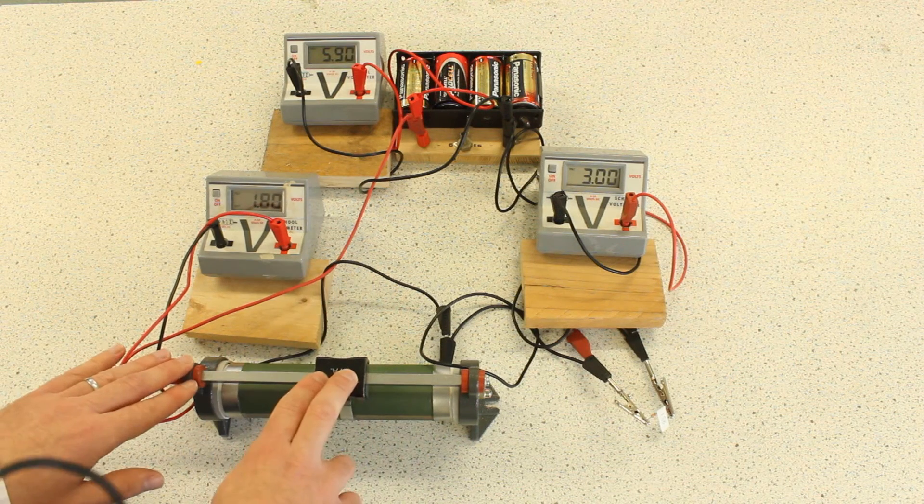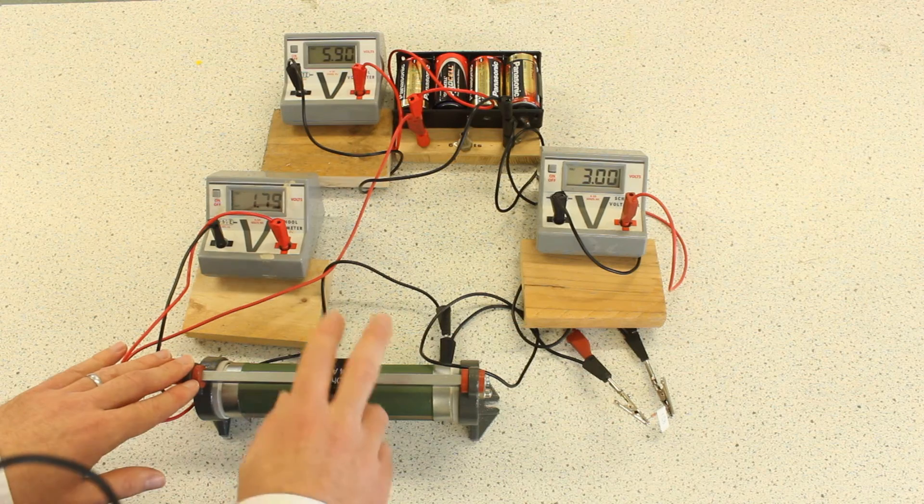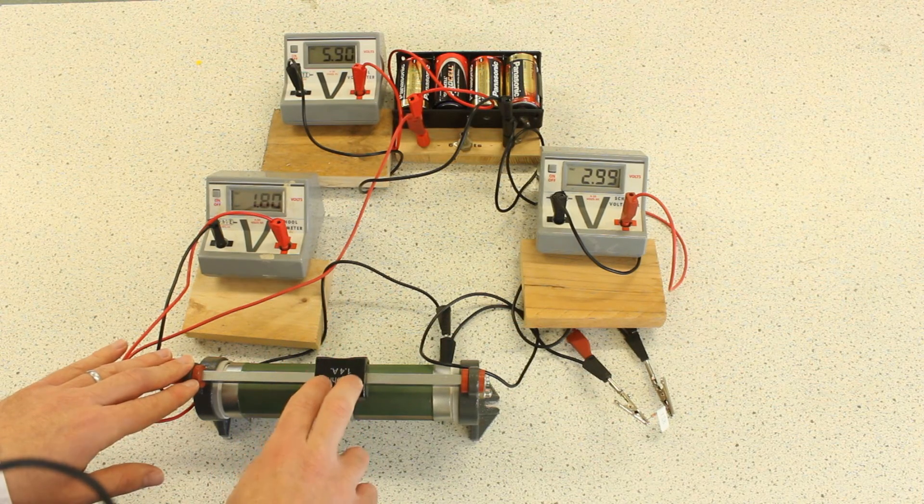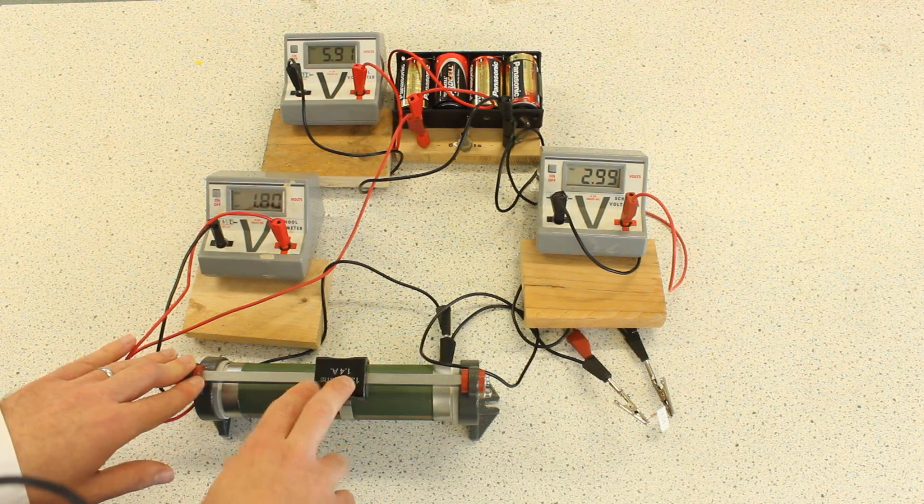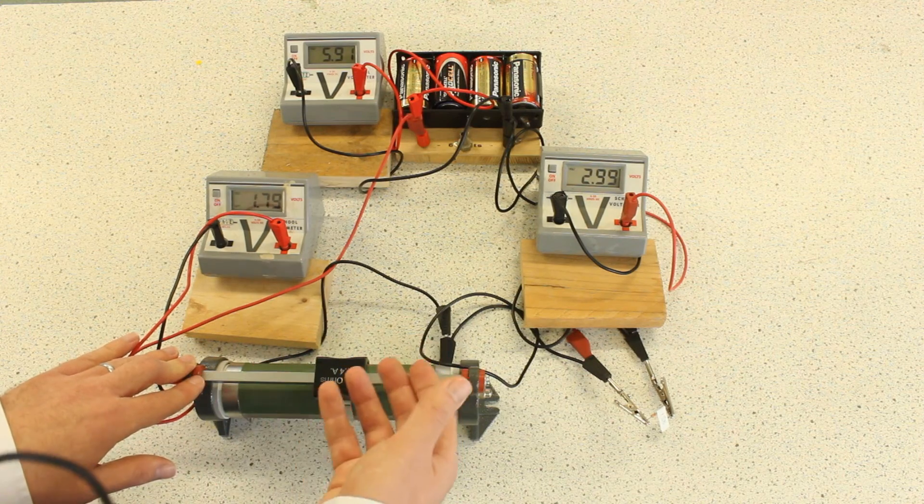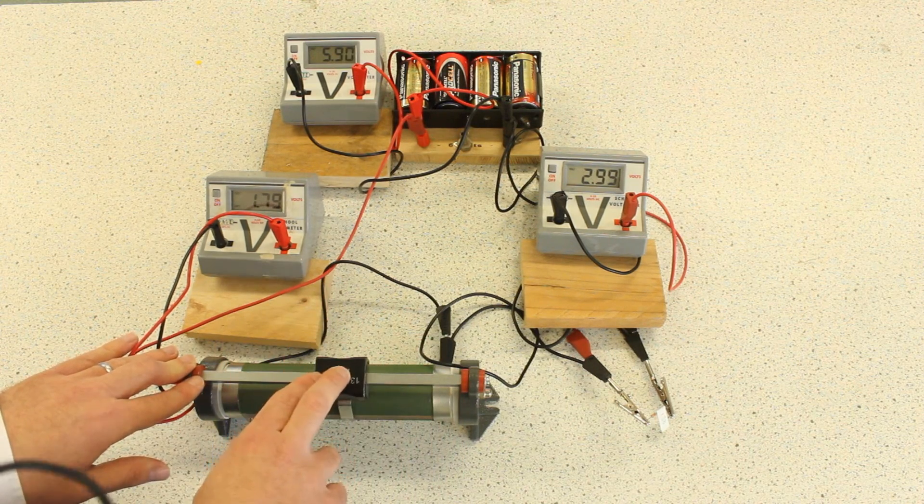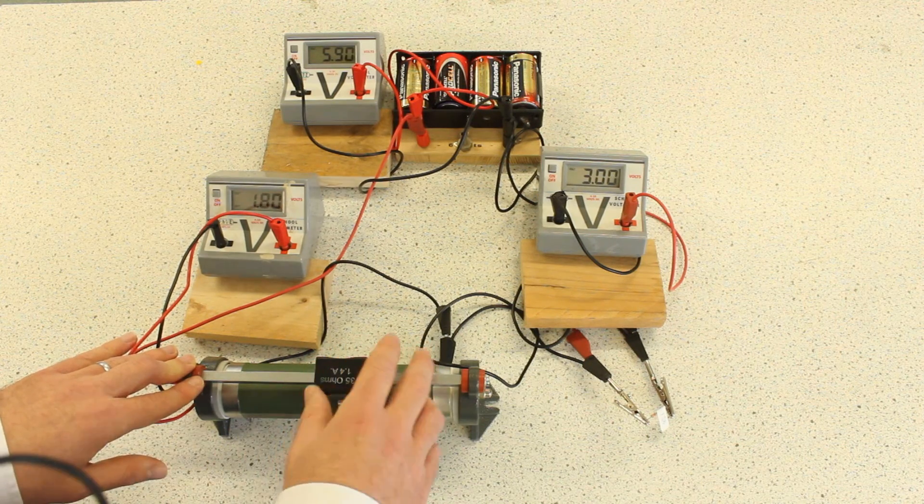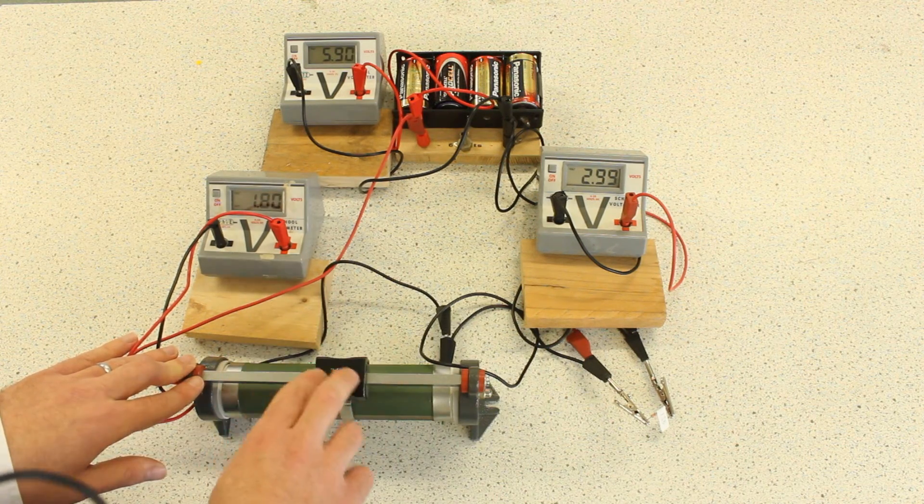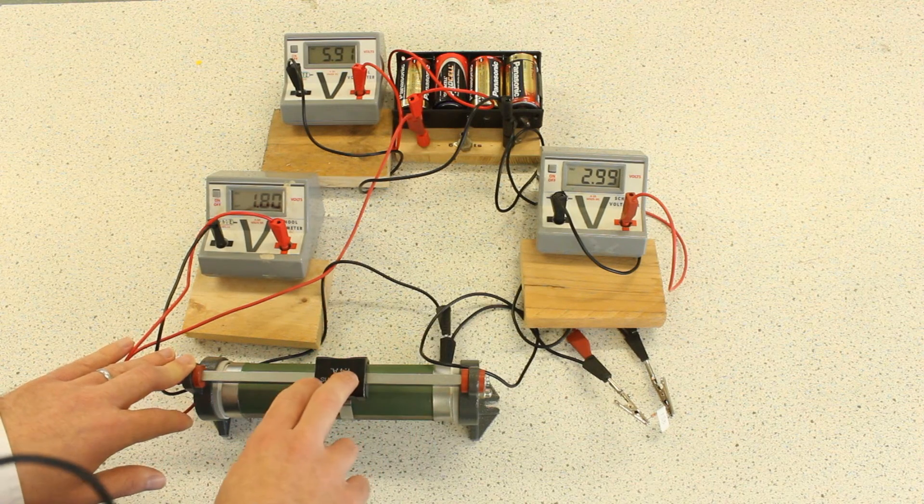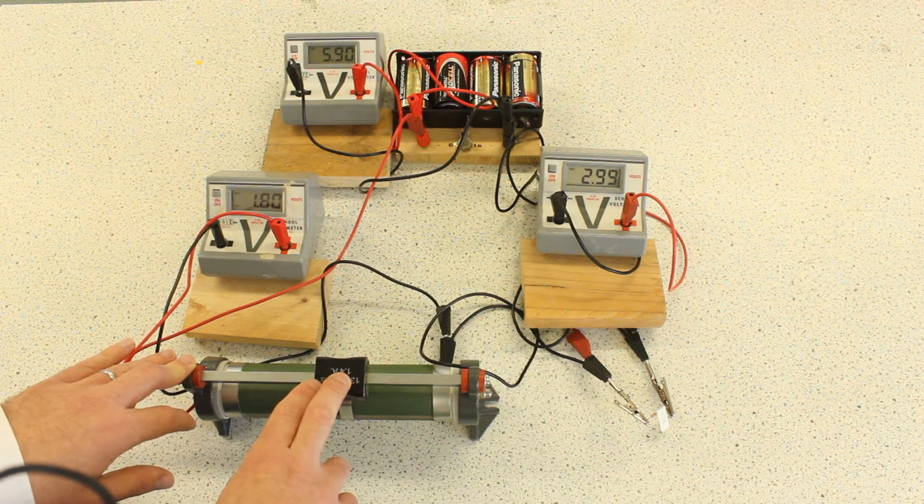But it really gets interesting when you're using instead of just a manually variable resistor here, you're using a variable resistor which varies with a different stimulus. For example, a thermistor which varies resistance with temperature, or an LDR, a light dependent resistor, which varies resistance with how much light is shining on it.